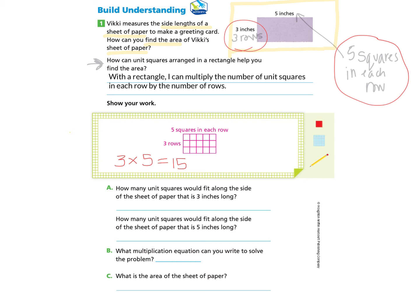With this information, I'm now going to answer questions A through C. How many unit squares could fit along the side of the sheet of paper that is 3 inches? This 3-inch one here shows that we could fit 3 unit squares. How many unit squares could fit along the side that is 5 inches long? That's here at the top.